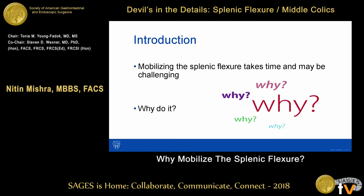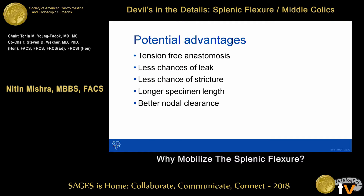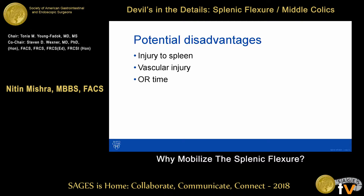So then why do it? These are the potential advantages: you can get a tension-free anastomosis, there is potentially less chance of leak — though this is very difficult to prove — less chance of stricture, longer specimen length, and likely better nodal clearance. The potential disadvantages are injury to the spleen, the potential for vascular injury — which is enhanced by lack of anatomical knowledge or failure to review preoperative imaging — and, of course, OR time.